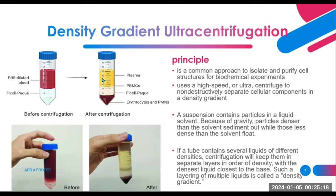In a suspension comprising particles suspended in a liquid solvent, the force of gravity leads to sedimentation of denser particles and buoyancy of less dense ones. When multiple liquids with different densities are present in the tube, centrifugation results in their stratification into distinct layers according to density, with the most dense liquid settling closest to the base. In our case, we have erythrocytes and PMNs — before centrifugation there are two layers, but after density gradient ultra-centrifugation there are four layers.